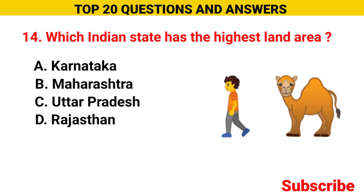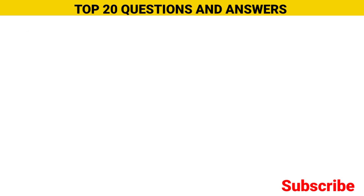Which Indian state has the highest land area? Option A Karnataka, option B Maharashtra, option C Uttar Pradesh, option D Rajasthan. The correct option is option D, Rajasthan.